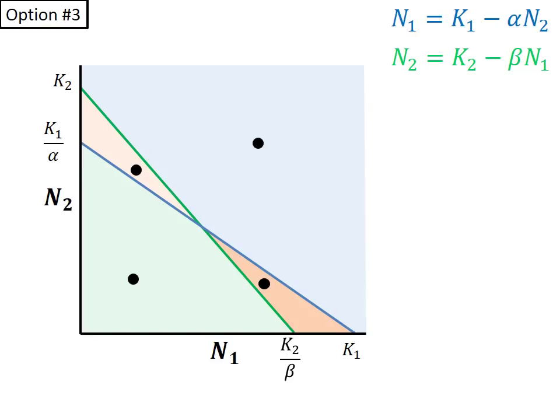The blue and green regions are pretty straightforward, as before. However, the overall winner is determined by which of the two orange regions the population trajectories enter first. If it is the dark orange, we are below the species 1 isocline, above the species 2 isocline, so species 1 will win.